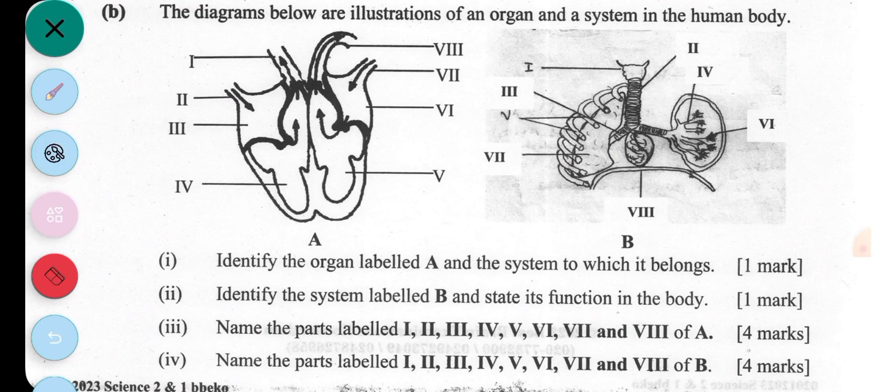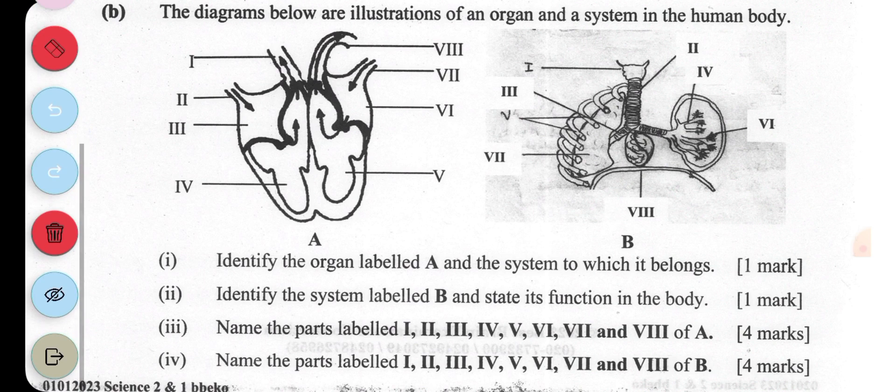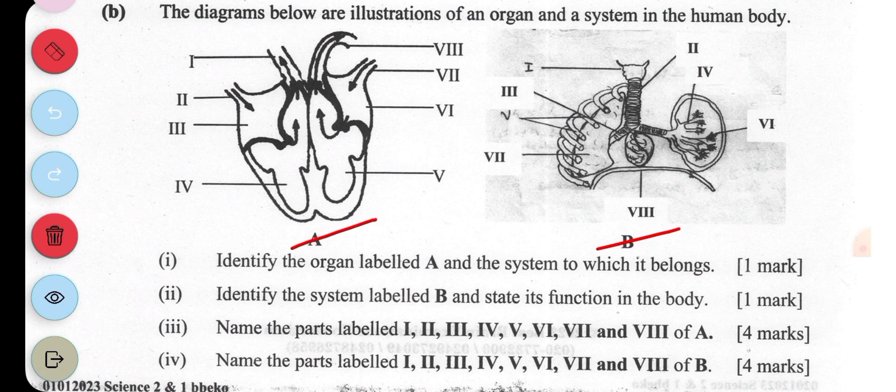The diagrams below are illustrations of an organ and a system in the human body. Which of them is the organ? Which of them is a system? A is the organ, B is a system. The first question is asking us to identify the organ labeled A and the system to which it belongs.